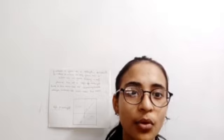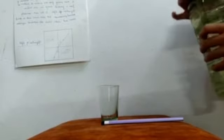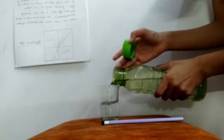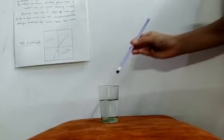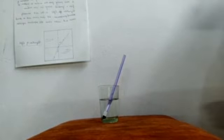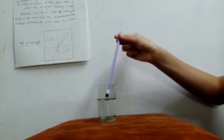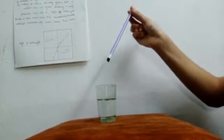Now let us start the activity to understand refraction of light more easily. The materials required are a glass, a pencil, and water. The procedure is to put water in the glass until it is just half full. Now put the pencil in the glass which is filled with water. Observe — when putting the pencil in the glass, the pencil looks like it is broken, but actually when we remove it from the water it looks fine.